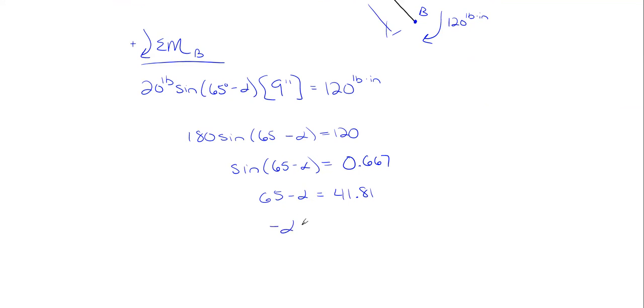So we would end up with minus alpha is equal to minus 23.19 degrees when we take 65 from each side. So dropping the minus sign from each side, we end up with our alpha angle of being 23.19 degrees. And that is our answer.